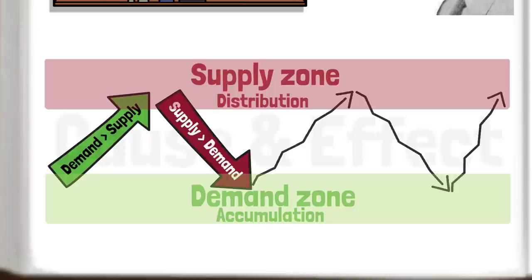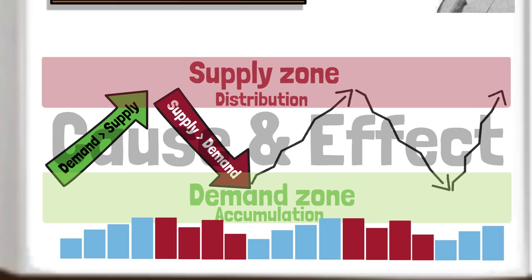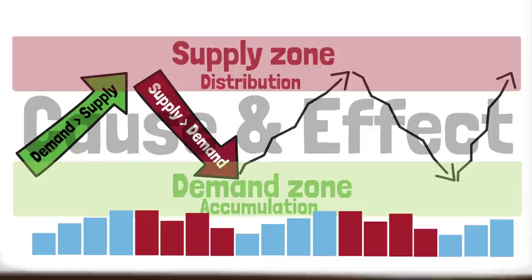The law of cause and effect sits behind this supply and demand action. In other words, the volume is the cause and the price action is the effect. If the cause is small, the effect will be small, and if the cause is large, the effect is large.